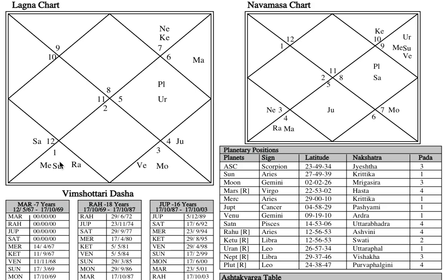You can also check the 11th lord, which is a very important planet for married life. Mercury is the 11th lord. If the 11th lord is linked with the second or seventh and placed in good dignity, it can do wonders for married life. But here the 11th lord Mercury is again placed in the sixth house, a difficult placement. And Mercury is in Kritika nakshatra, which is ruled by the Sun, which is again in the sixth house.